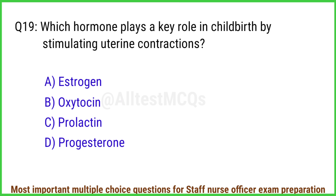Q19. Which hormone plays a key role in childbirth by stimulating uterine contractions? The right answer is option B: Oxytocin.